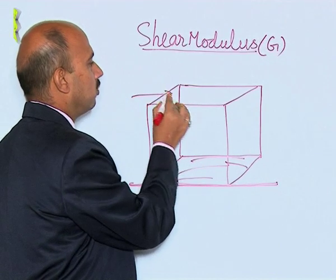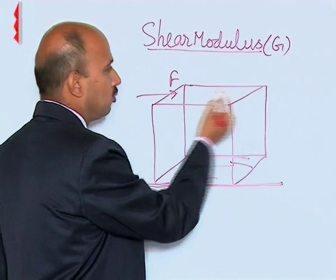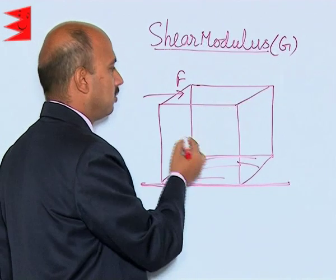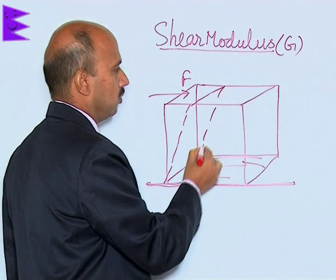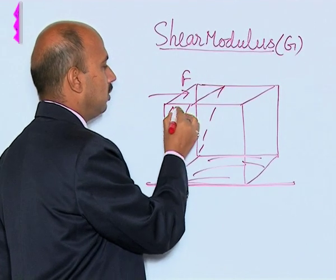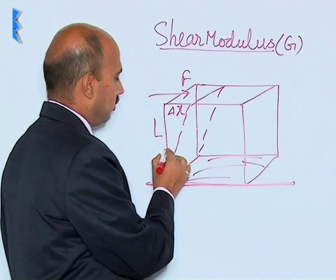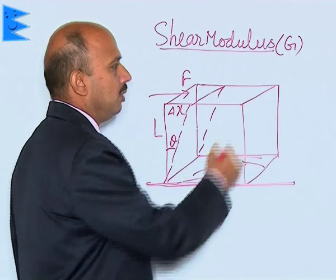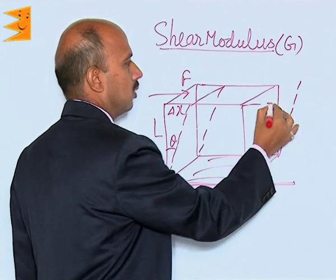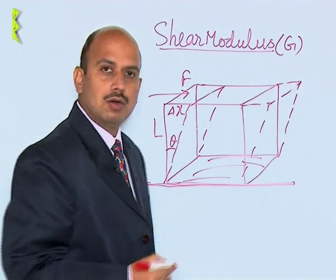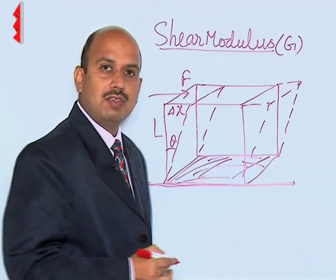When we apply a tangential force F from the top, there is a displacement on the upper surface. This displacement is delta x, the length is L, and the angle formed is theta. Similarly, this side also gets displaced, but the bottom portion remains fixed with the ground.